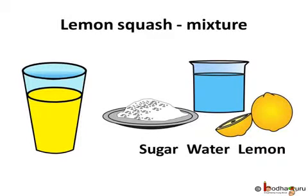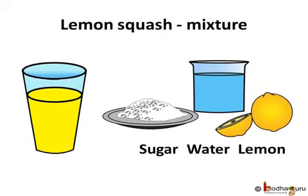We mix a few pure substances to make a mixture. Like, we added sugar, water and lemon juice to make a drink. The lemon squash will reflect the properties of all the components present in it. Like, the squash will have the sweetness of sugar, sourness of lemon and of course the coolness of water.